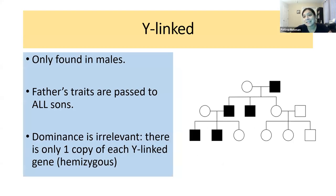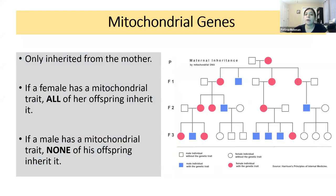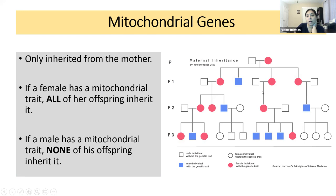Y-linked disorders are only found in males because only males have Y chromosomes. The father's trait is passed to all of his sons, and dominance is irrelevant because there is only one Y chromosome — it is hemizygous. For mitochondrial diseases, they are only inherited from the mother, because when a sperm fertilizes an egg it only passes on its DNA — all organelles, including mitochondria, come from the egg. So if a female has a mitochondrial trait, all of her offspring inherit it regardless of sex. If a male has a mitochondrial trait, he won't pass it to anyone.